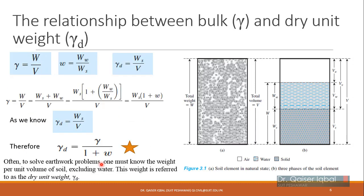Moving on to unit weight: we need to derive the relationship between bulk unit weight and dry unit weight. The bulk unit weight γ = W/V is the in-situ unit weight under normal moisture conditions. The dry unit weight γd = Ws/V uses only the weight of solids, excluding water weight — that is the unit weight of soil in dry form.